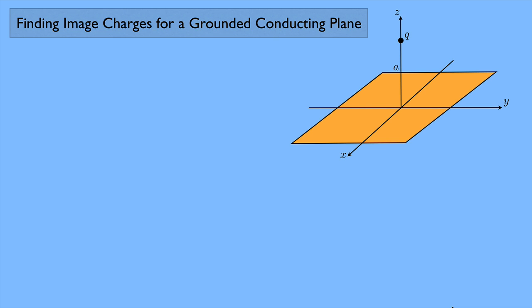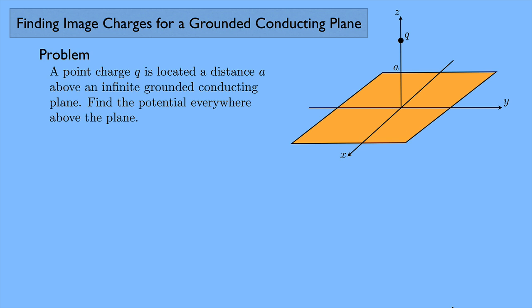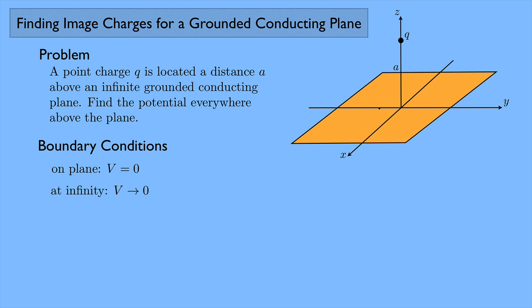Here's our plane with the charge at distance A above the plane. The first boundary condition says that on the plane, the potential is zero — it's an infinite grounded conducting plane. The second boundary condition is that at infinity, the potential should go to zero. If we let our surface be at infinity, then the potential has to vanish as we go off infinitely far away from the plane.